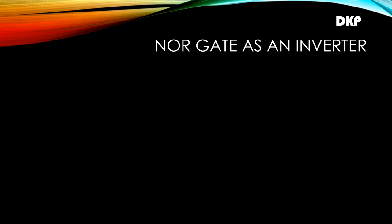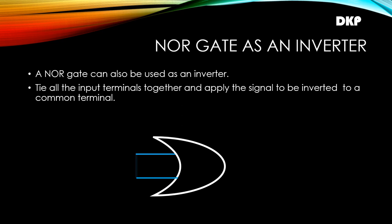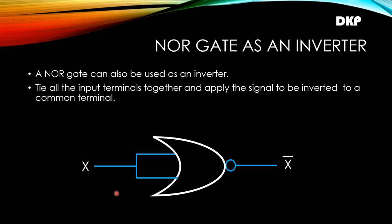Now let us see how we can convert a NOR gate as an inverter. A NOR gate can also be used as an inverter. Tie all the input terminals together and apply the signal to be inverted to the common terminal. Here in the logic symbol of the NOR gate, we tie the two input terminals together and apply the input signal. You will get the inverted output from the NOR gate. So if you give x as the input you get x-bar as the output. If you give 0 as input you get 1 as output, and if you give 1 as input you get 0 as the output.